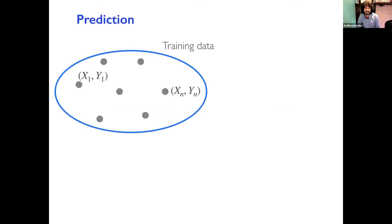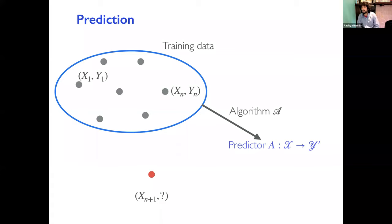I'm going to talk about two separate themes: two separate ways of quantifying uncertainty. The first is called conformal prediction and the second is called calibration. The key to both is the phrase 'distribution free,' which means without making any distributional assumptions on the data — can we quantify uncertainty of the predictions that any black-box machine learning algorithm is making?